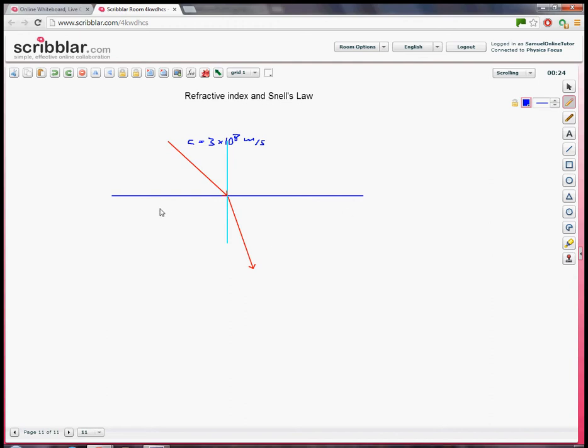In glass, the speed varies a bit depending on exactly what kind of glass it is. But the speed here is less than C, less than 3 times 10 to the 8.